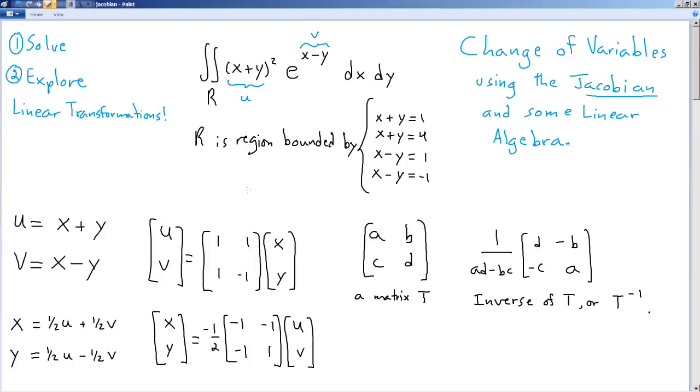And what we'll notice is that this can be written as a matrix equation. So if you know how matrix multiplication works, we take the first row, and we multiply it by the first column, and that gives us the first entry in the answer. So 1x plus 1y is u.